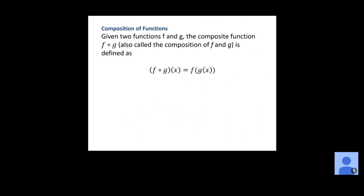Now, composition of functions. Given two functions f and g, the composite function f∘g, or the composition of f and g, is defined as f(g(x)). The g(x) is the inside function and f is the outside function. Whenever you're doing a composition, whatever comes second becomes the inside function, and whatever comes first becomes the outside function.